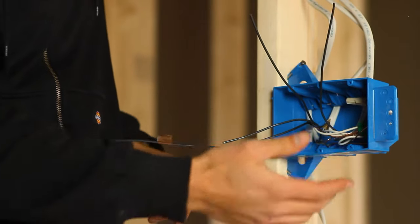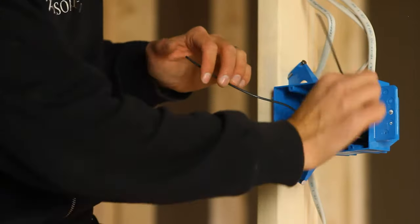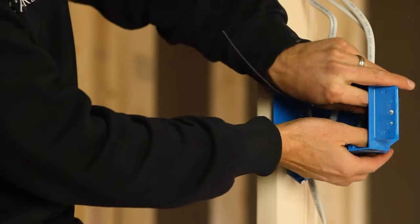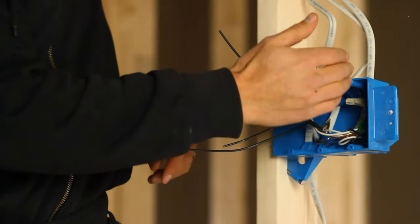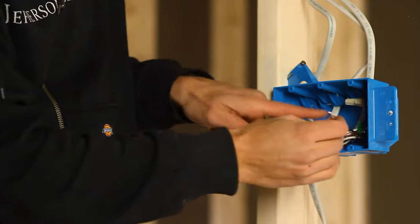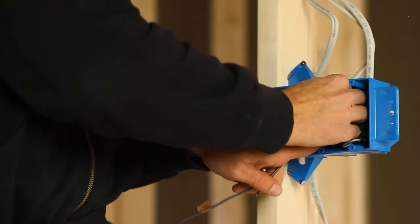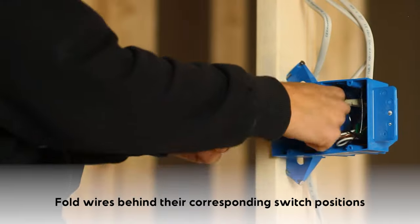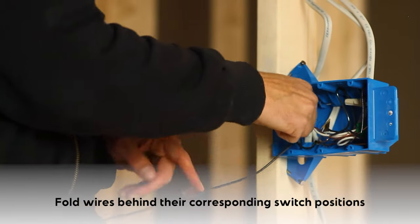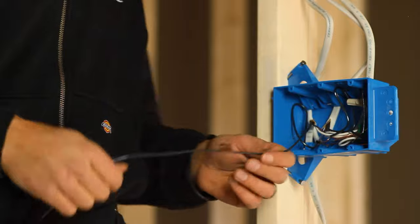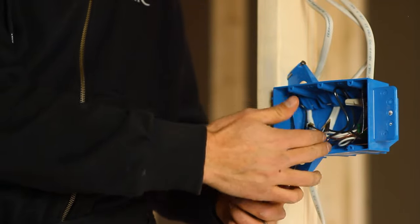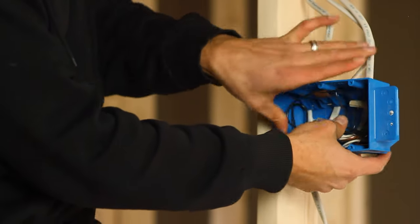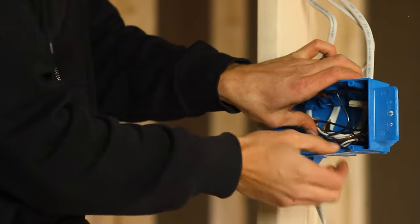And then I'm going to take switch legs one, two, and three, and I'm going to put them in their respective position. I've folded it in a vertical in position three. I'm taking switch leg two, I'm folding it in position two. I'm taking switch leg one, and I'm folding it into position one. And then I'm taking my hot conductor, that provides the power feed for all three switches, and I'm overlaying it into the box, and again, tucking it back to keep it safe.